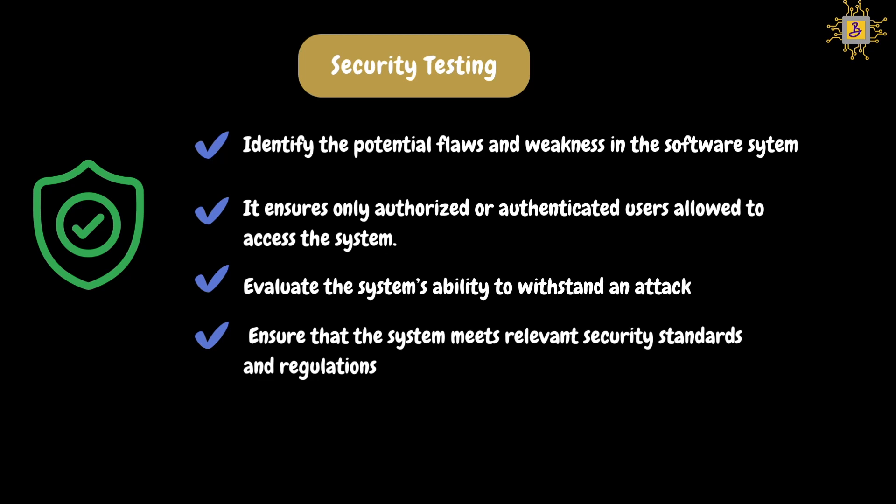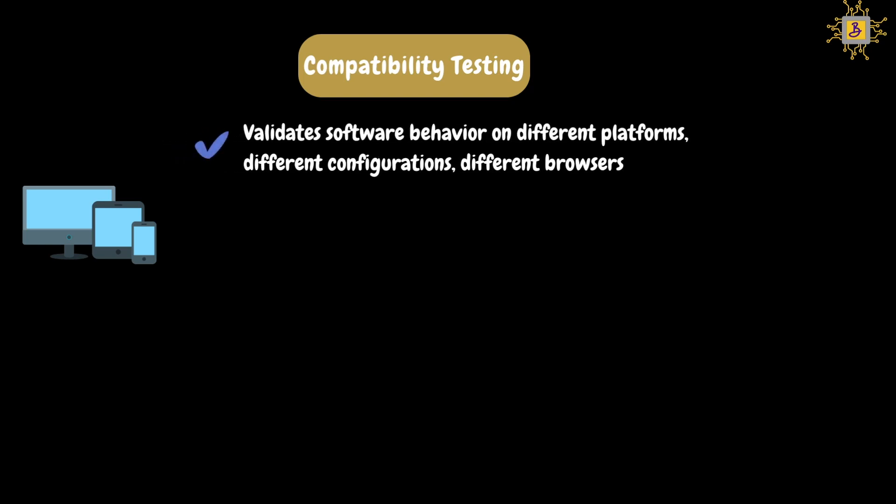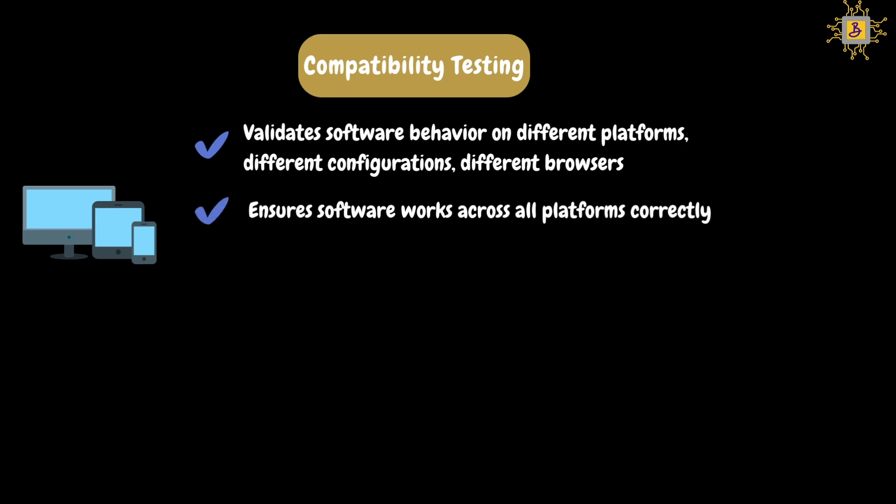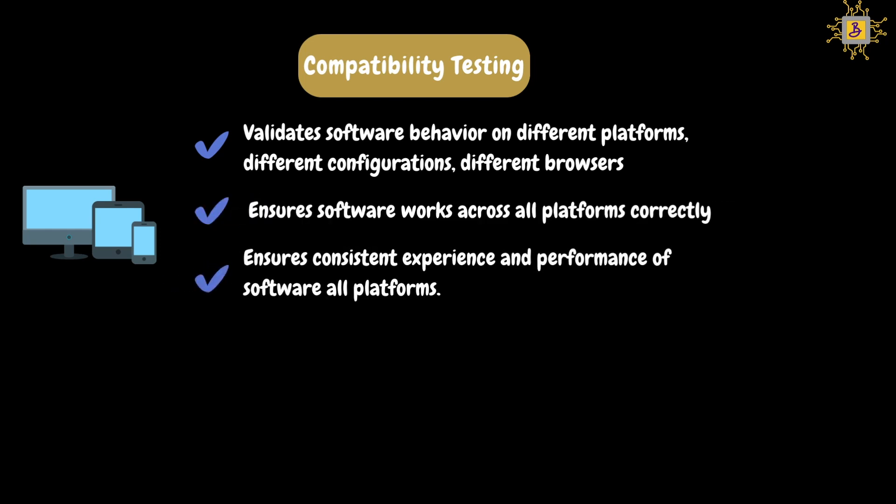Now let's discuss compatibility testing. This is a type of testing that validates how software behaves and runs in different platforms, different configurations, or different browsers. For example, is the software working in the same way in both Google Chrome and Microsoft Edge, or are we seeing different behavior? This testing will ensure that the software works across all platforms correctly and ensures a consistent experience and performance on all different platforms. In general, for compatibility testing, the application should be stable — meaning it should not have any functional issues — so we can differentiate the issues appropriately.